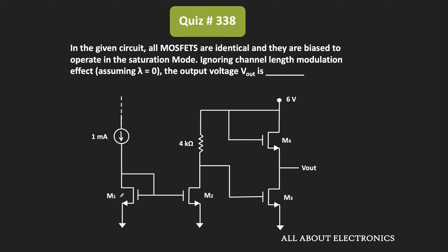Welcome to the YouTube channel all about electronics. In this question we have been given a MOSFET circuit where all the MOSFETs are identical, meaning the device characteristics of all MOSFETs are equal. Moreover, all the MOSFETs are biased in such a way that they are operating in the saturation region.